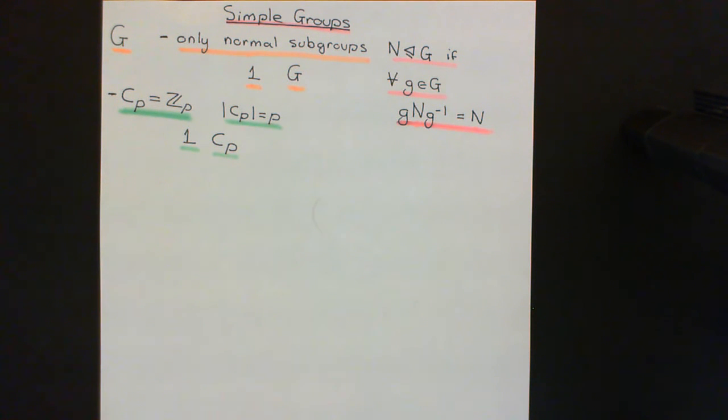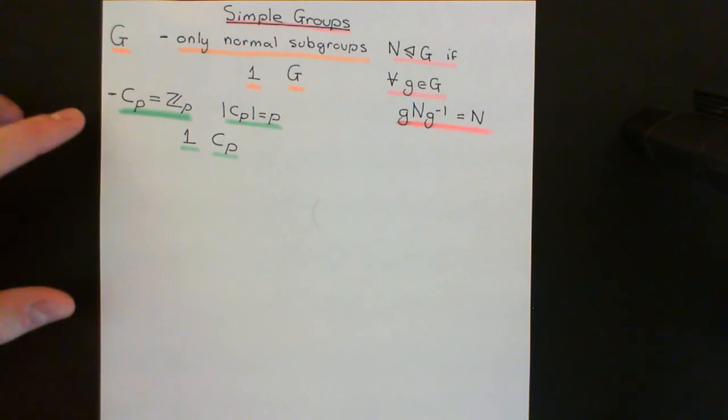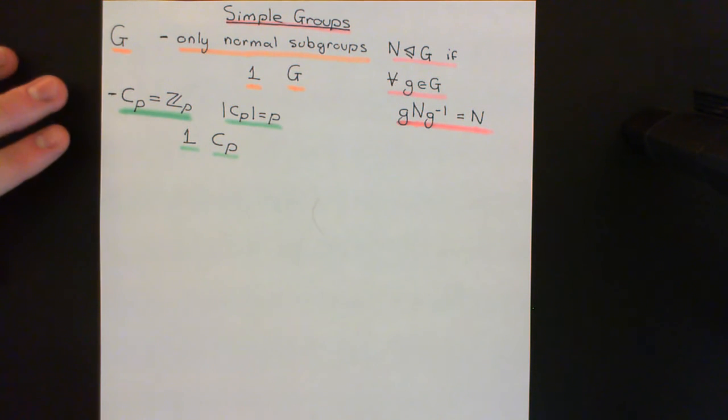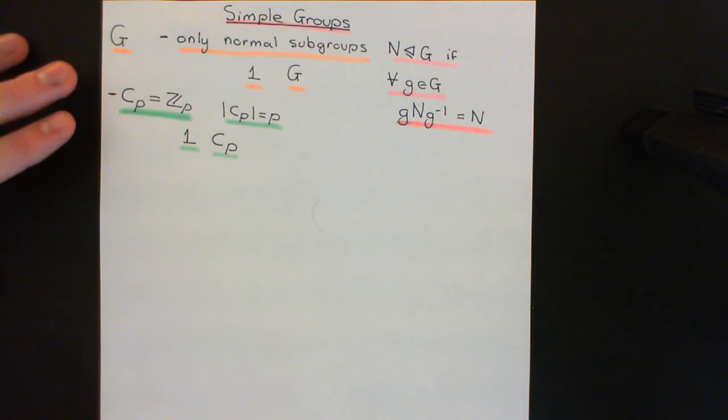So it's certainly going to be true that these groups are simple, and these make up a massive great family of finite simple groups.